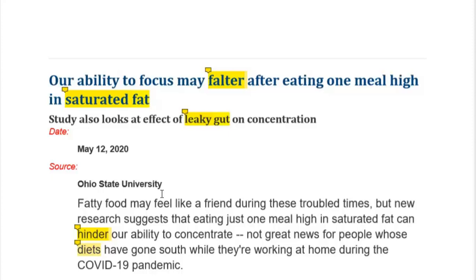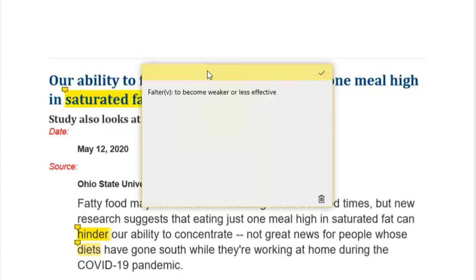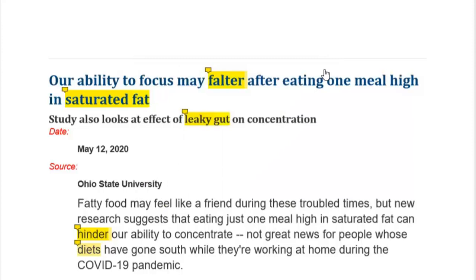The new format means the meaning of each word is attached to its own word so that you understand it in its specific context. The title of this research is: 'Our ability to focus may falter after eating one meal high in saturated fat.' It is important to understand the title. What does 'falter' mean? Falter is a verb which means to become weaker or less effective. So our ability to focus may become weaker.